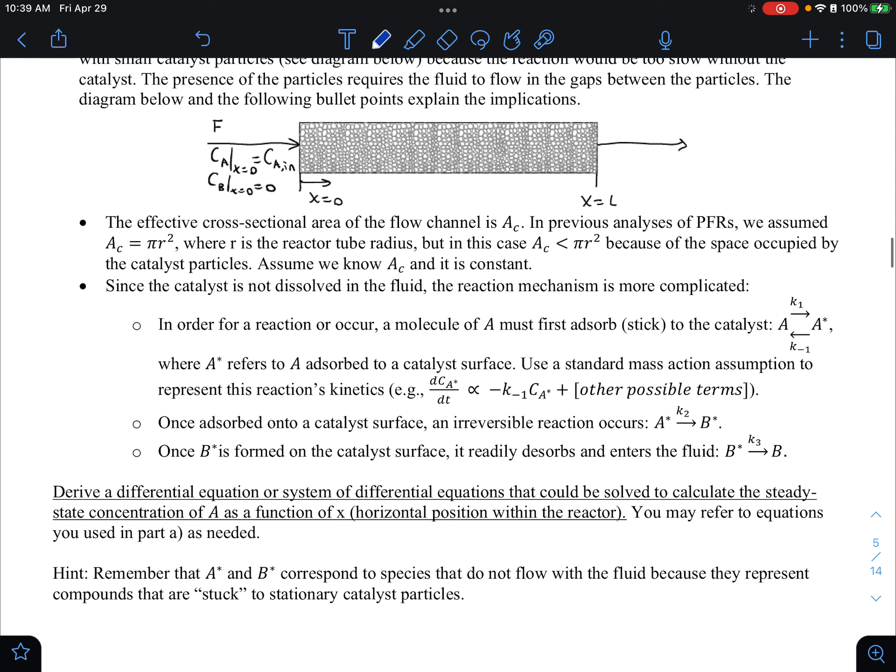So you have the same input, right? So CA is going in. There's no CB, no CA star. The effective cross-sectional area is AC. We called the cross-sectional area AC before, but now it's a different formula. So it says previously it was just pi r squared, the cross-sectional area of the tube. But now because of the particles,